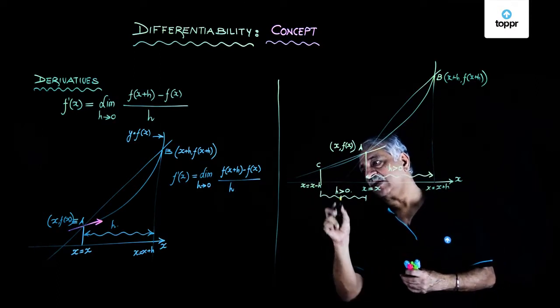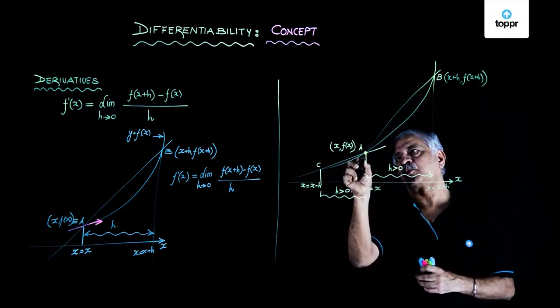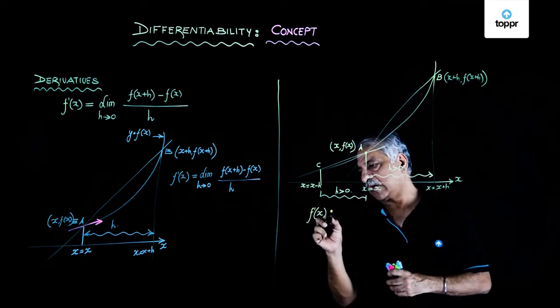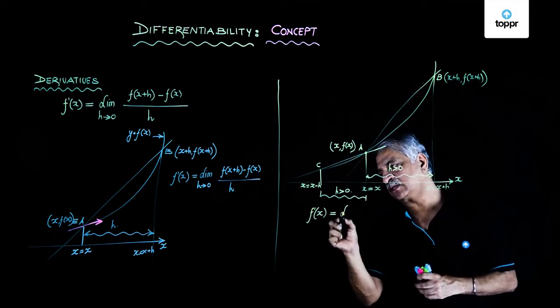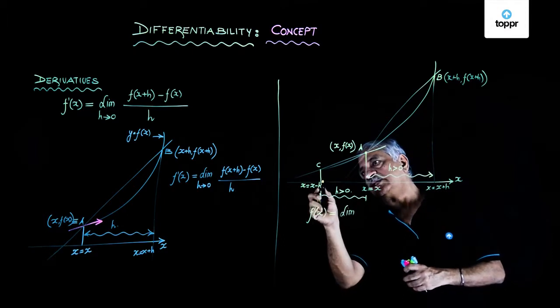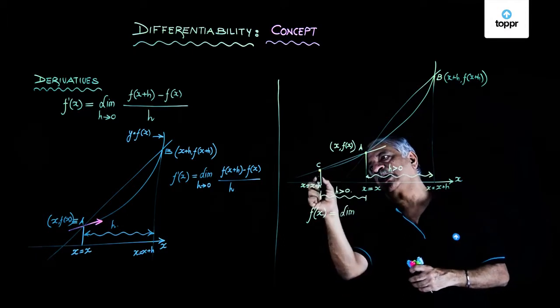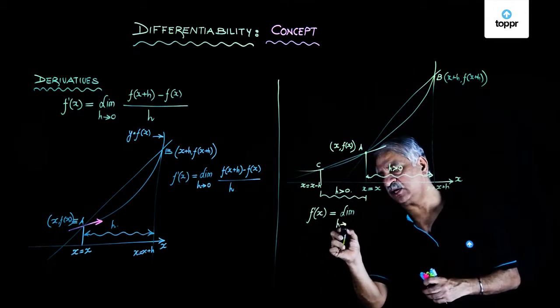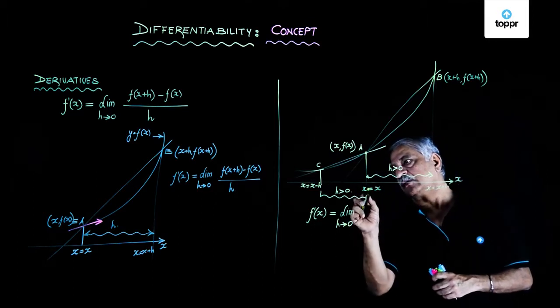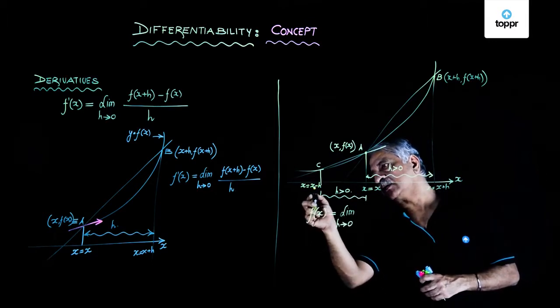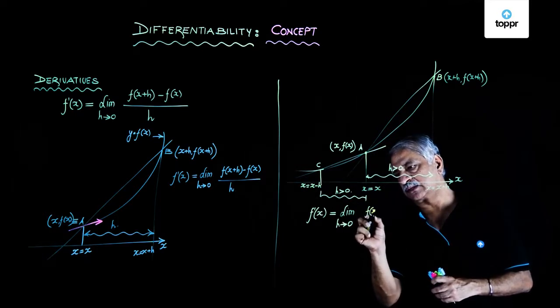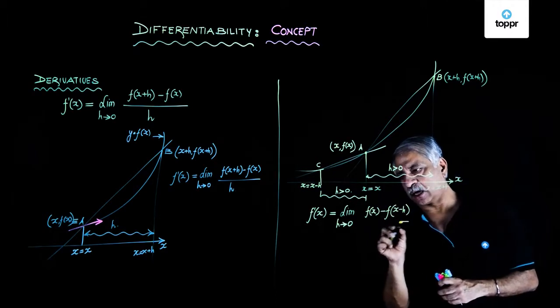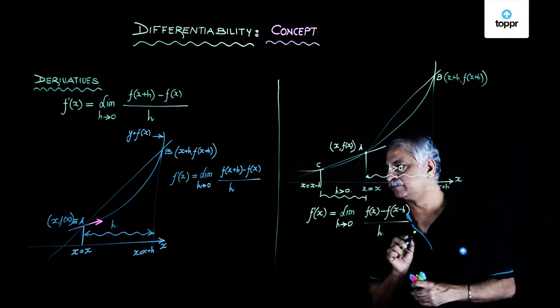Then I can definitely say that for this particular point, f'(x) I can definitely write down this as limit. Now C is approaching A along the curve. So I can say h tending to 0. I have h is larger than x - h, so f(x) - f(x-h) upon h.